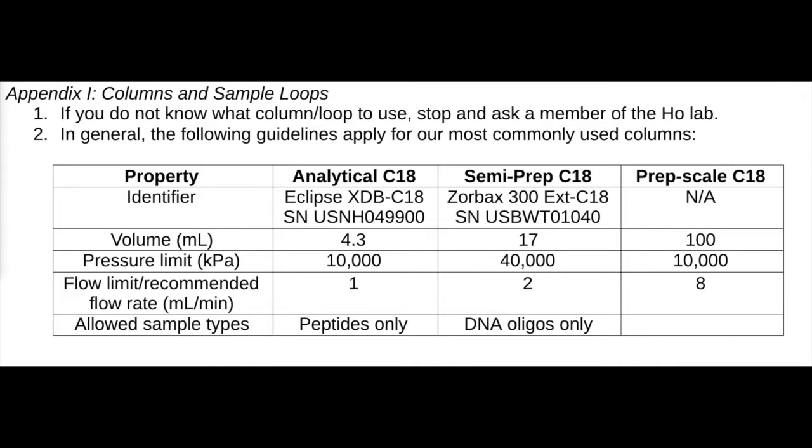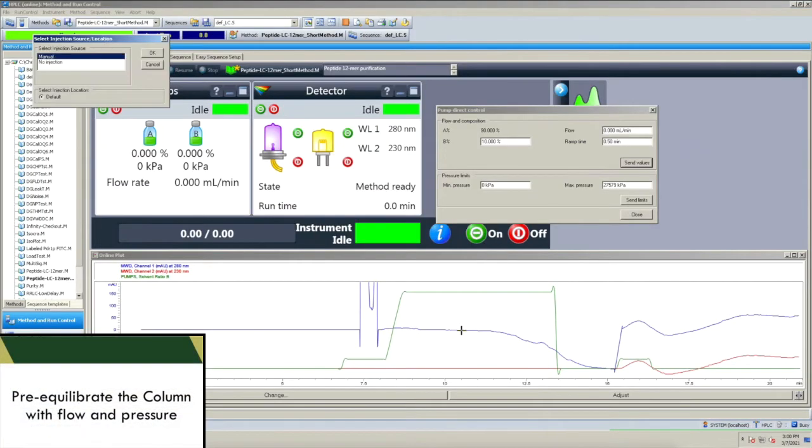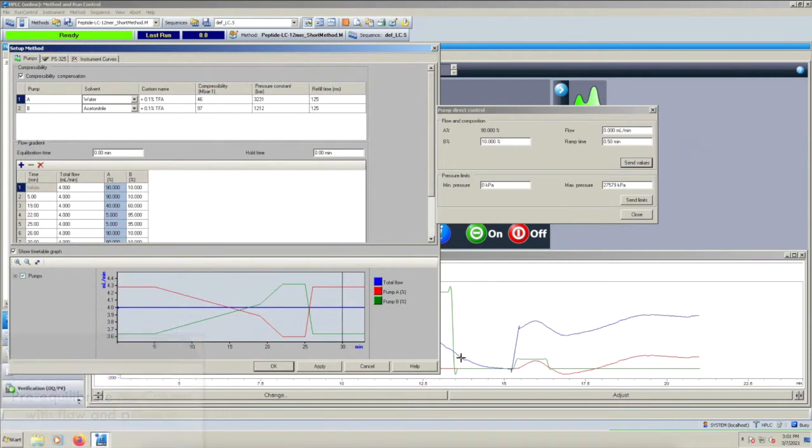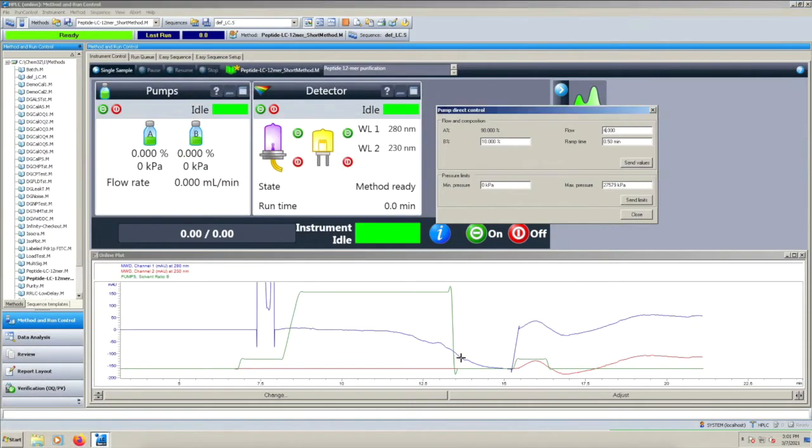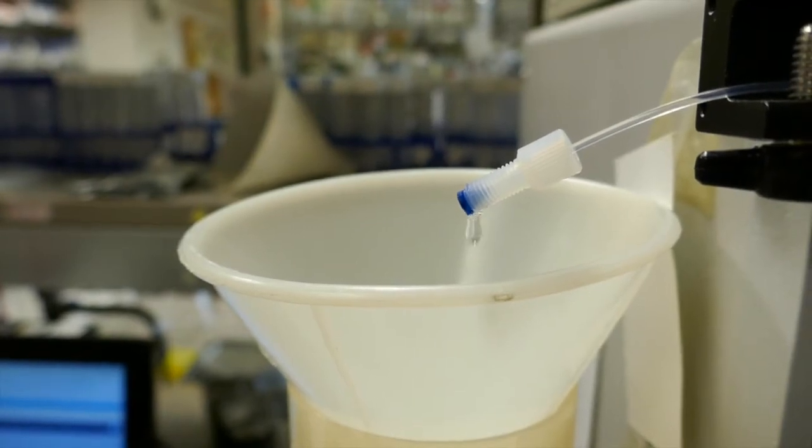At this point, you should check your method and make sure that it is what you want loaded for whatever you're going to be purifying on the system. Then we're going to pre-equilibrate the column over a 5 to 10 minute period. Bring the flow rate and the percent acetonitrile that you have in your first step of your method up to that point.